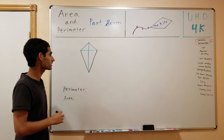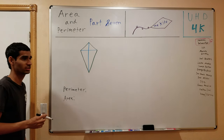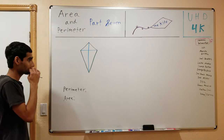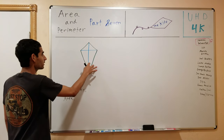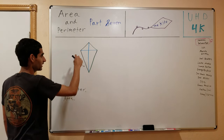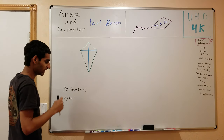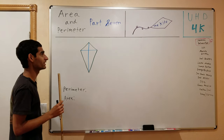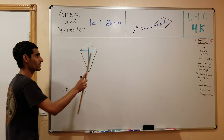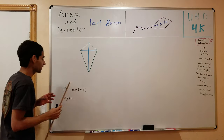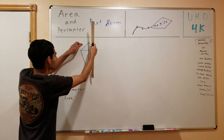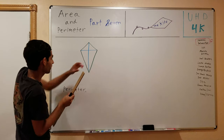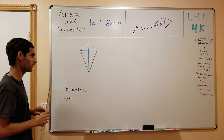So a kite is quite different from all the other four-sided shapes we have covered. In a kite, two of the sides are equal in length, the other two are equal in length, but this pair of sides and this pair of sides aren't equal in length. This is a kite over here, and by the way it gets its name because it is shaped like the kite that flies.